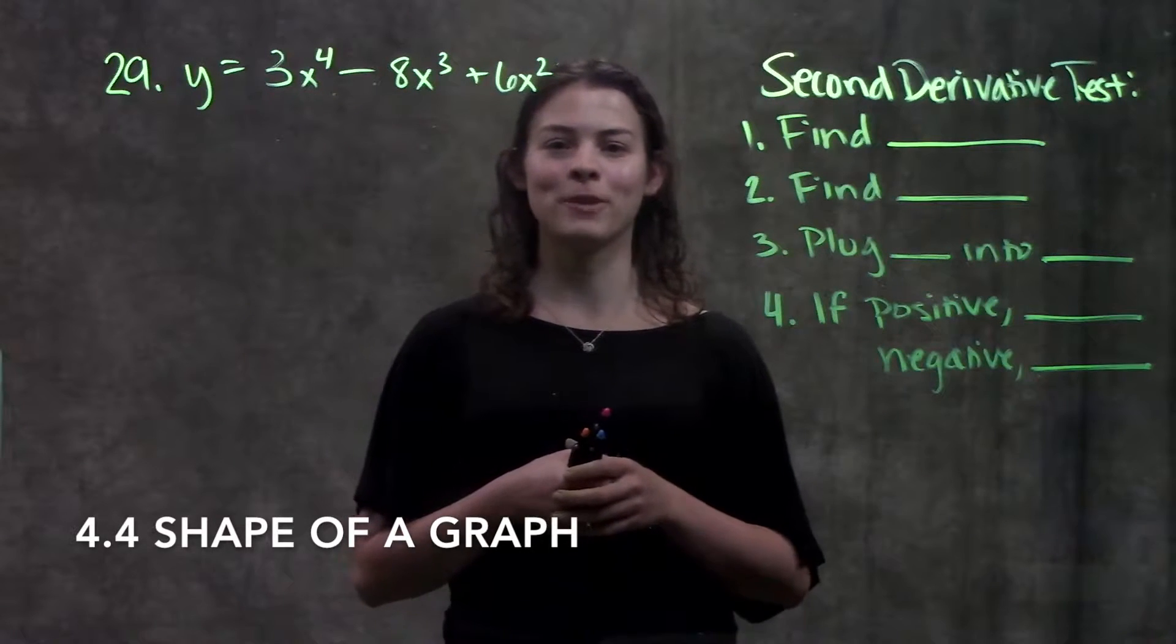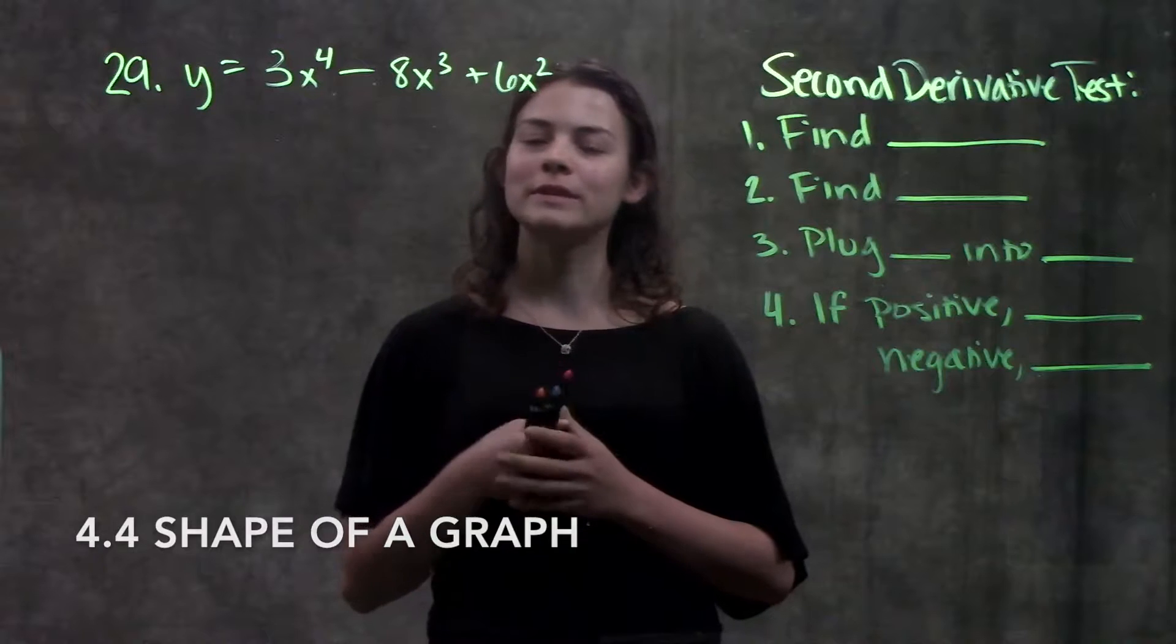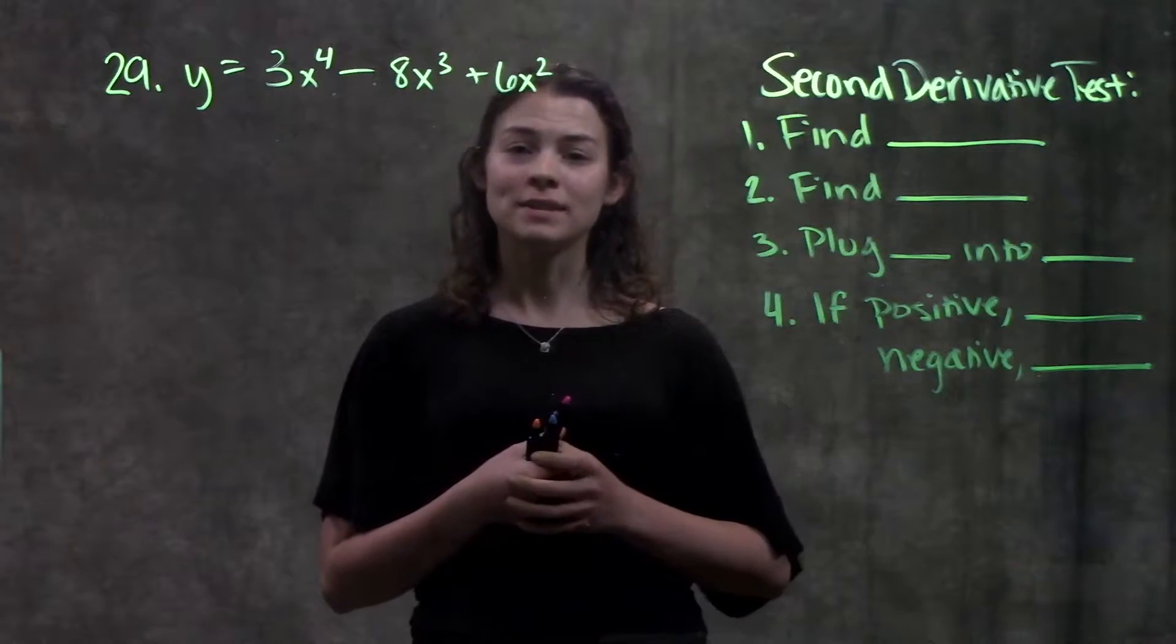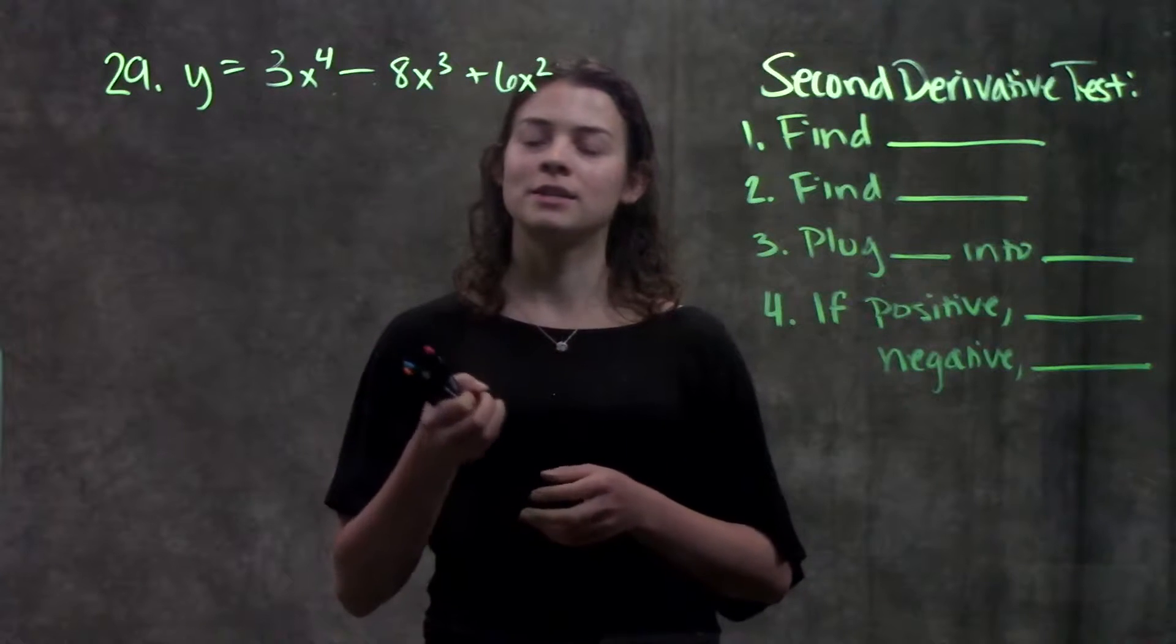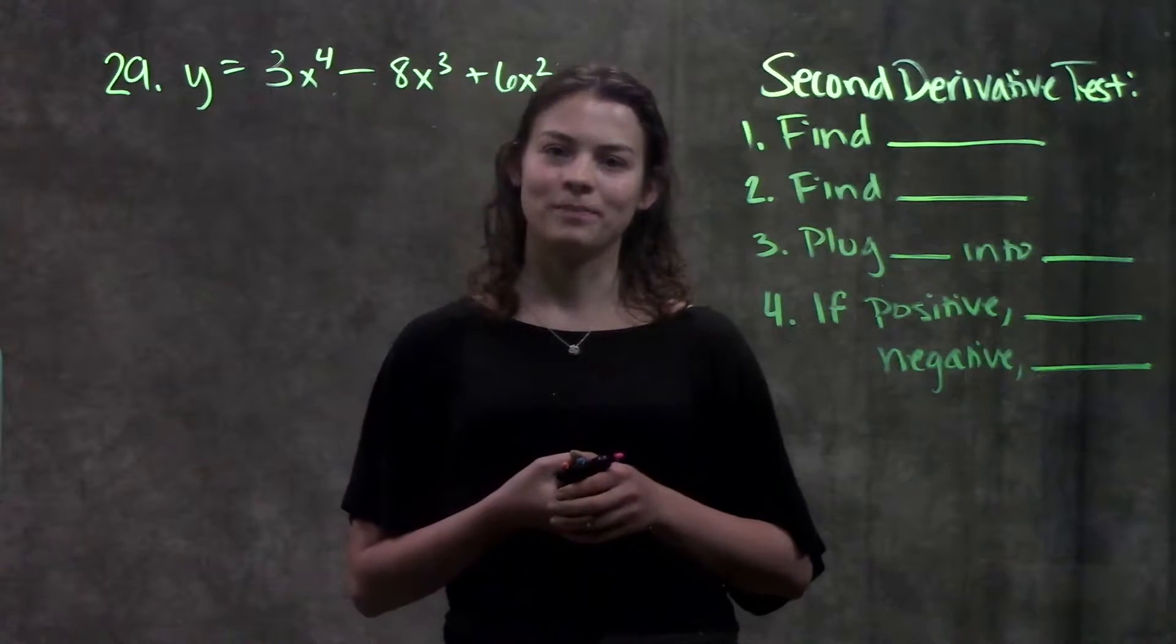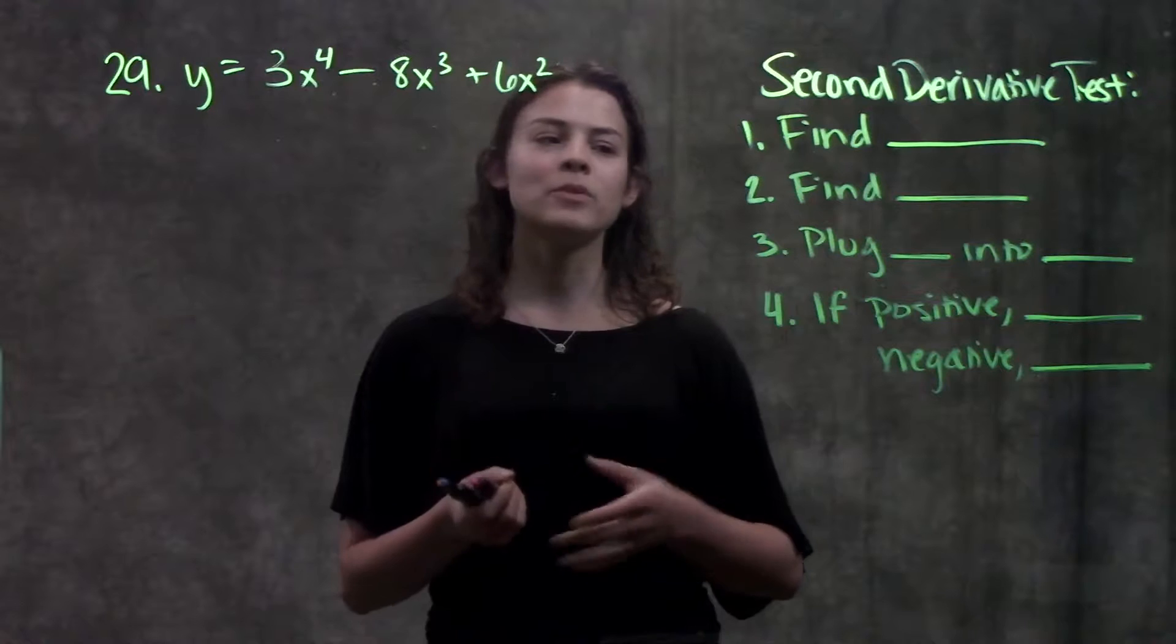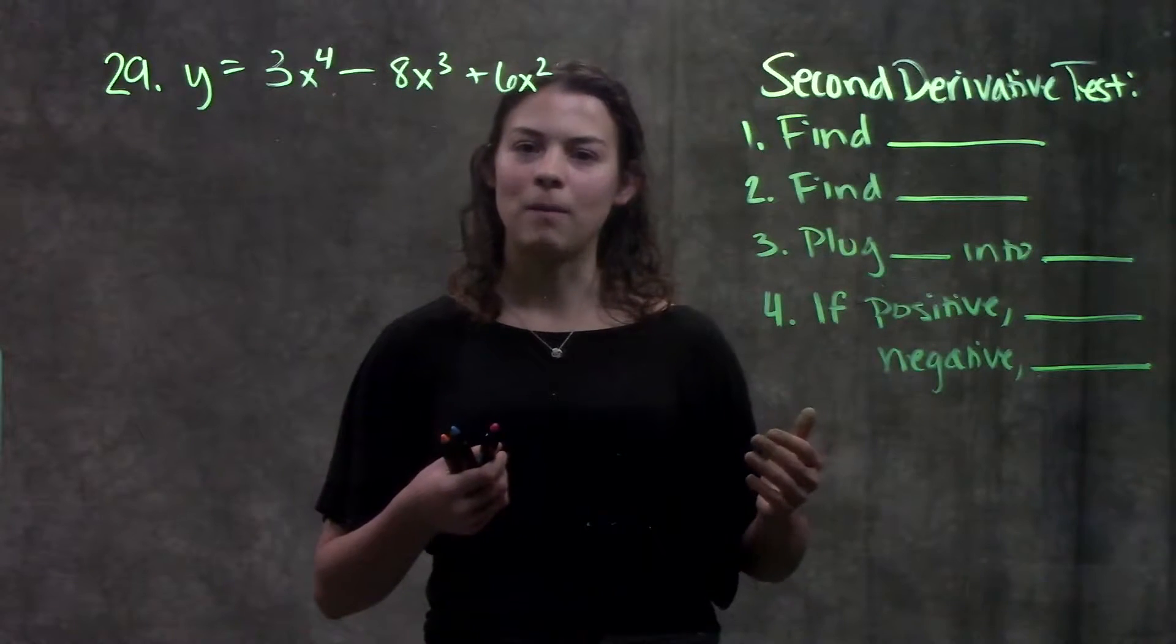This is section 4.4, Shape of a Graph. In this video, we're going to go through example 29 in your book, and this is an example of a question where it's asking us to use the second derivative test to determine the maxes and mins of this function. And while we go through this example, we're also going to fill out the step-by-step guide of how to solve these types of problems.